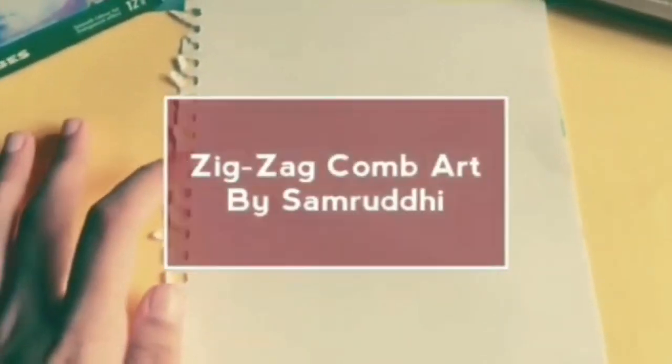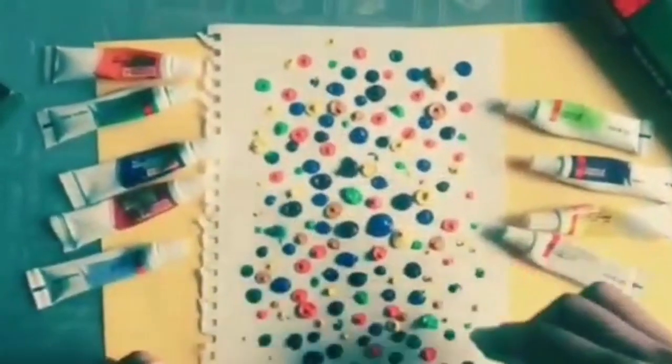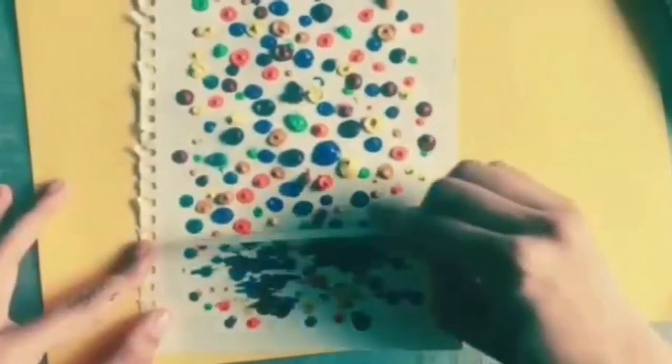Zigzag comb art by Samrughi. You need paper, comb and watercolor tube. Put some drops of different colors on the paper. Take a comb and make zigzag texture. Our zigzag comb art is ready.